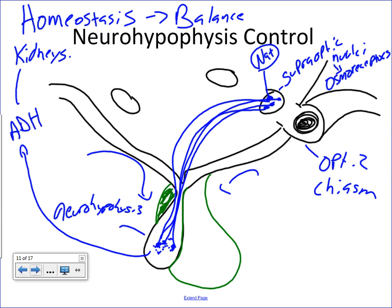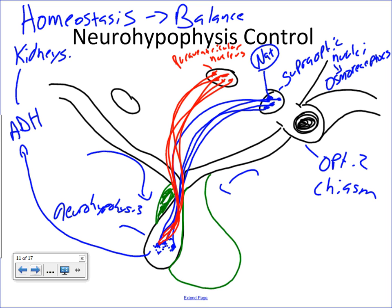In this area called the paraventricular nucleus, we've got neurons that project right down into the posterior lobe. These regulate the activity of another hormone called oxytocin, which is a hormone that's definitely more important in females than males. Oxytocin is basically used for uterine contraction and also the ejection of milk — two very different scenarios, but an important hormone for regulating those processes.